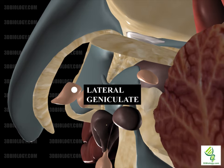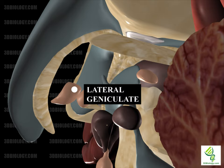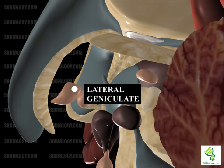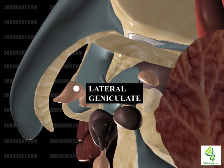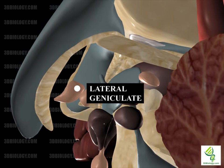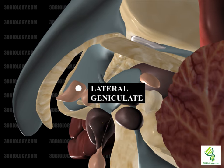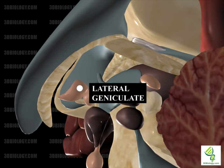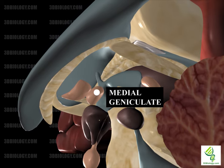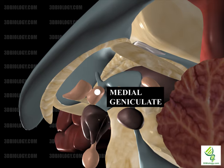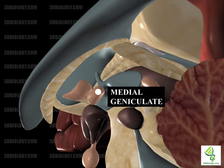The lateral geniculate is a small thalamic nucleus located at the end of the optic tract. It is a visual pathway relay center. Information from the eye and optic tract goes through the lateral geniculate on its way to the primary visual cortex. The lateral geniculate has six layers of neurons. The medial geniculate body is made up of several nuclei; it is part of the auditory system and acts as a relay between the inferior colliculus and the auditory cortex.